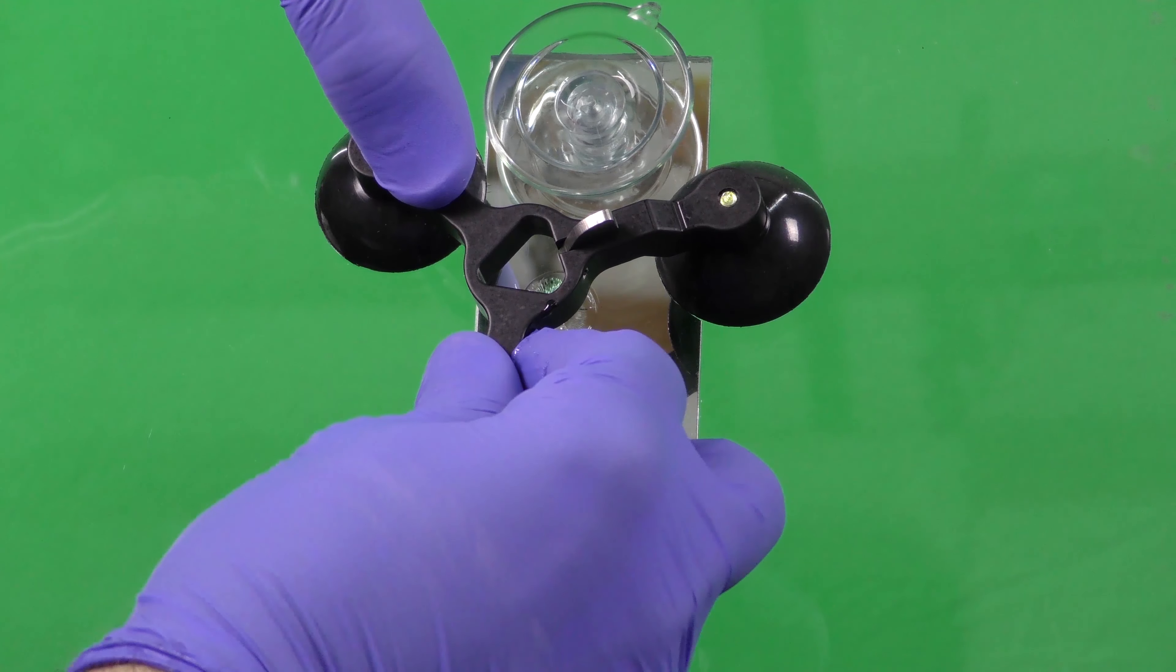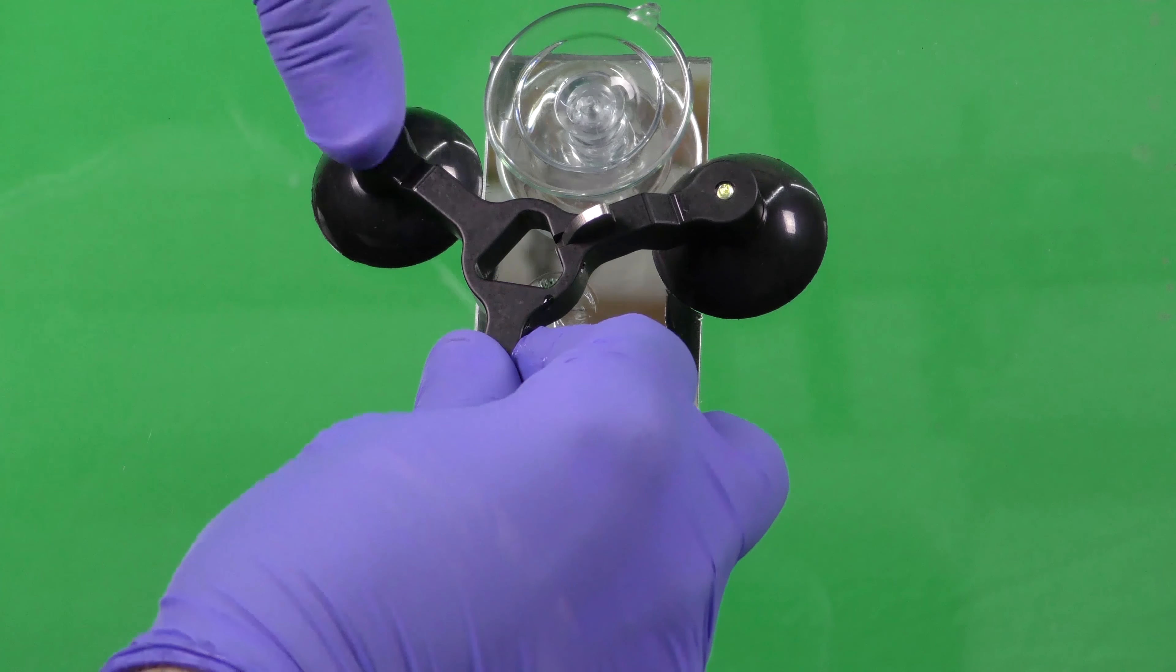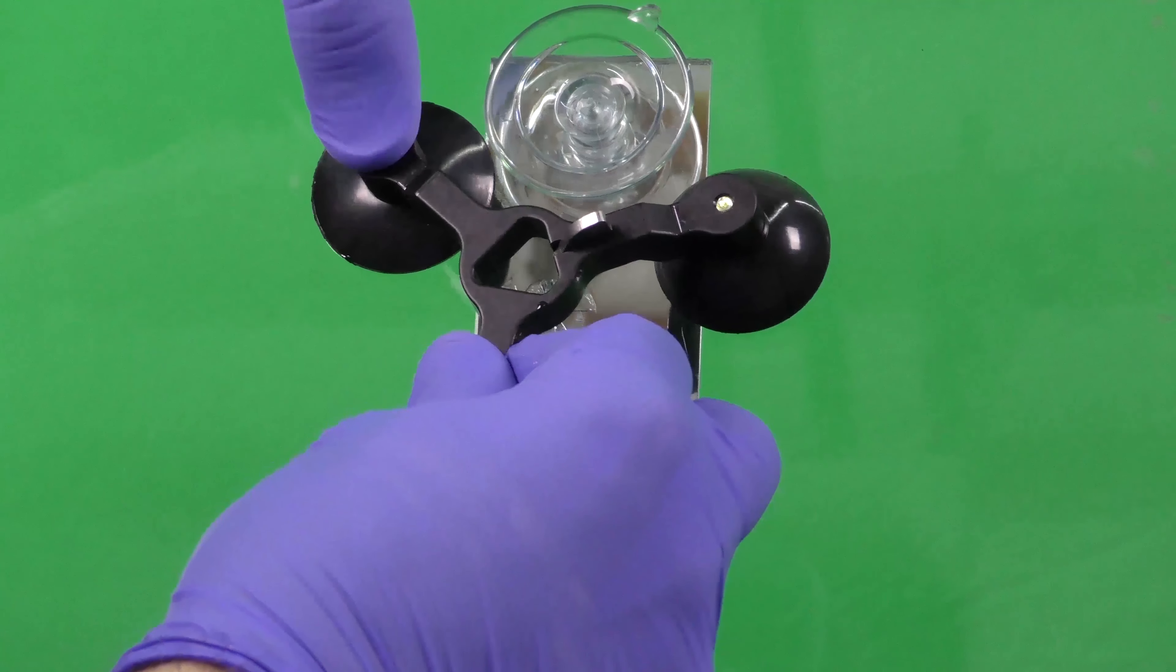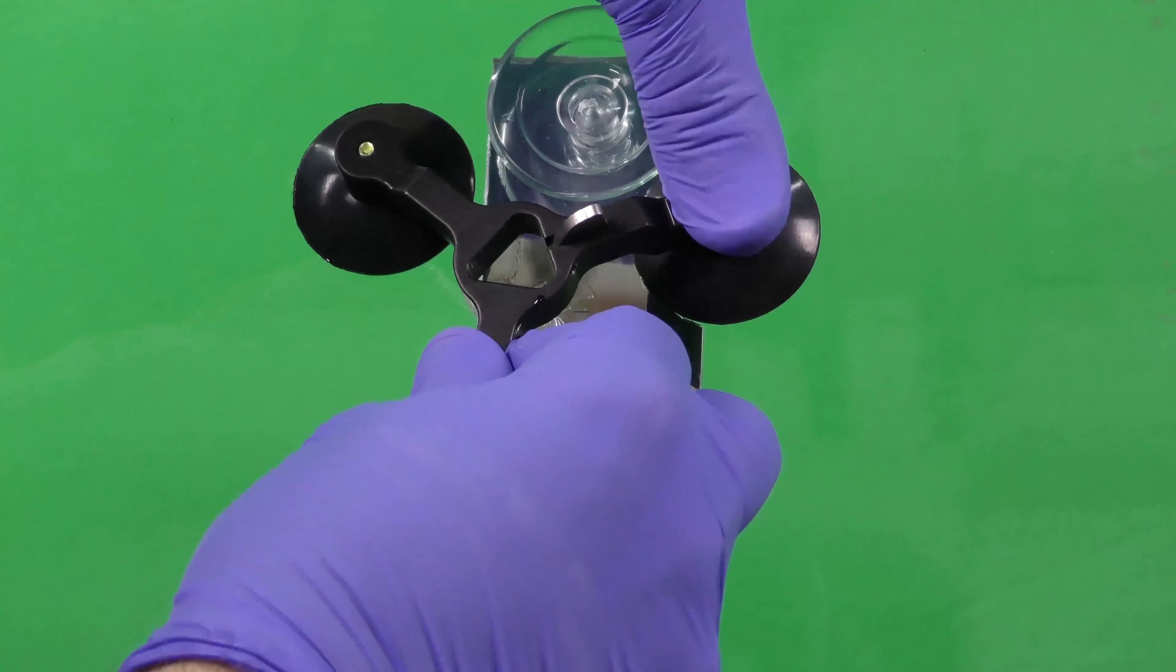Center the bridge directly over the impact area and press each suction cup one at a time.